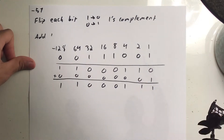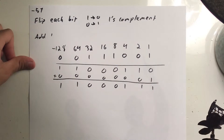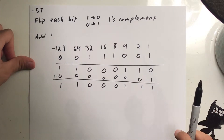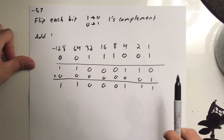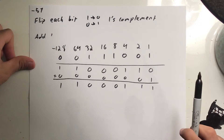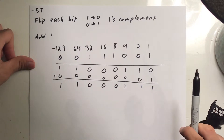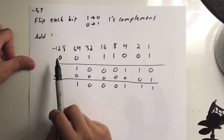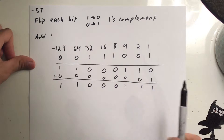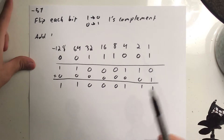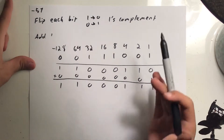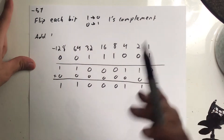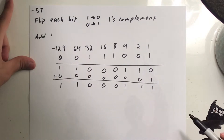To double-check: 64 plus 4 is 68, plus 3 is 71. Negative 128 plus 71 is negative 57. And we just confirmed that with the algebra from a moment ago.